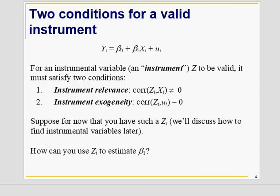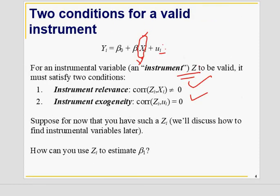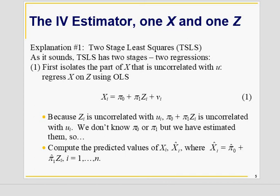X is correlated with U, so we need to find that part of X which is uncorrelated with U, and then replace that part of X in our regression. How do we achieve that? We need to find a variable Z which is correlated with X but uncorrelated with U. If these two conditions are satisfied, we say Z is our relevant instrument.